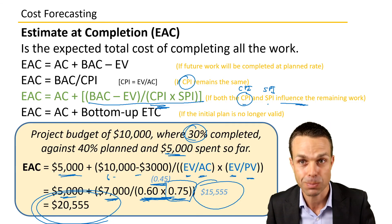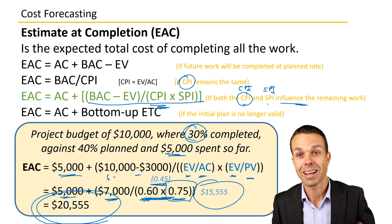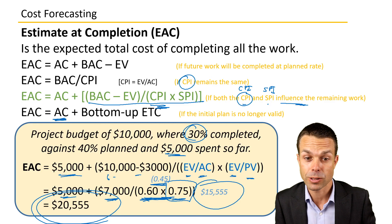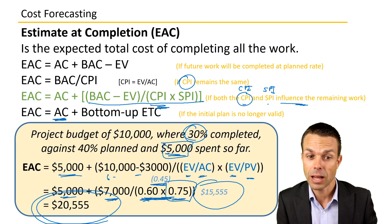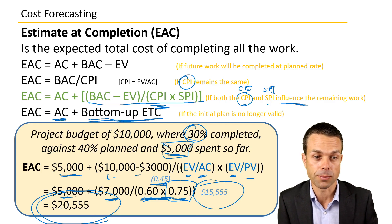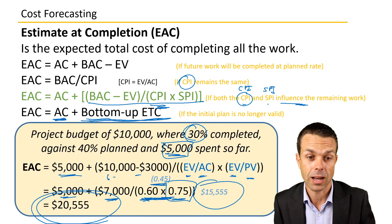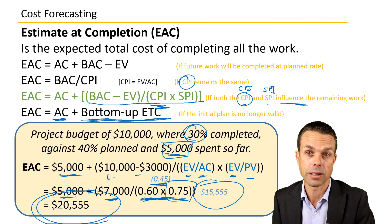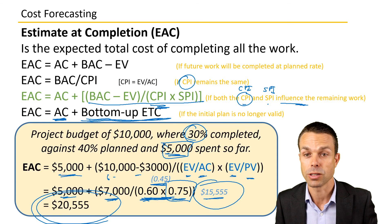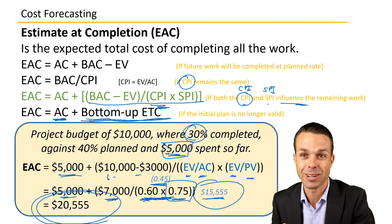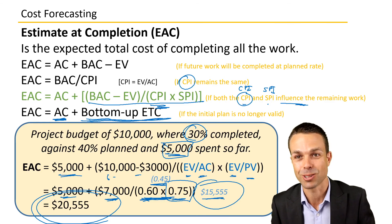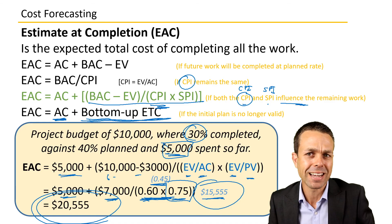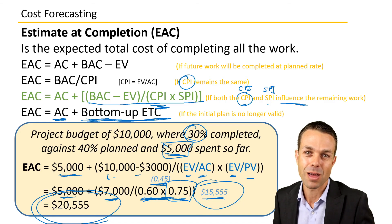Finally, you need to know that your EAC could simply be your actual cost so far ($5,000) plus a bottom-up estimate to complete. If you need to change plans completely and everything has gone off the rails, you re-figure all the remaining costs and add that to what you've spent so far. Those are the different ways to calculate your estimate at completion, which is the foundation for the rest of the cost forecasting methods we'll see in the next video.